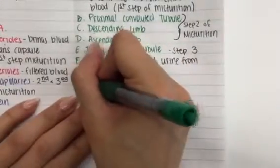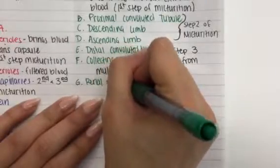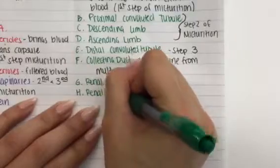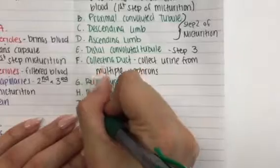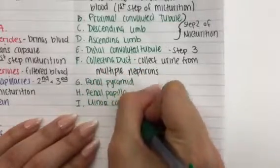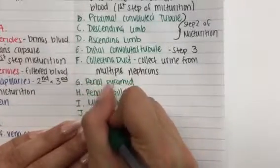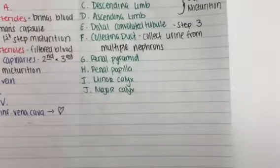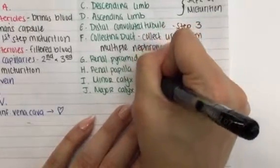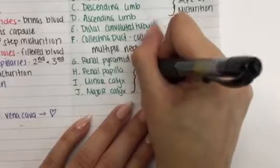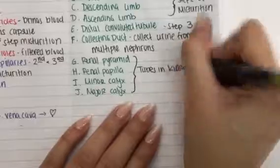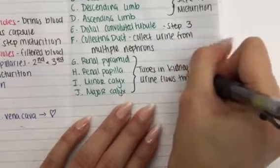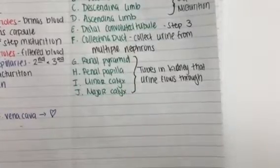So we're going to list the letter G, which is the renal pyramids. Where the renal pyramids end, we have the letter H, which is the renal papillae. Past the renal papillae, we have the letter I, which is the minor calyx. The minor calyces merged to form the major calyx. The renal pyramid, renal papillae, minor calyx, major calyx, those are all just tubes in the kidney that urine will flow through.